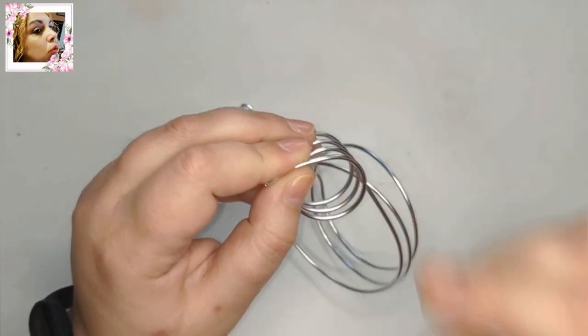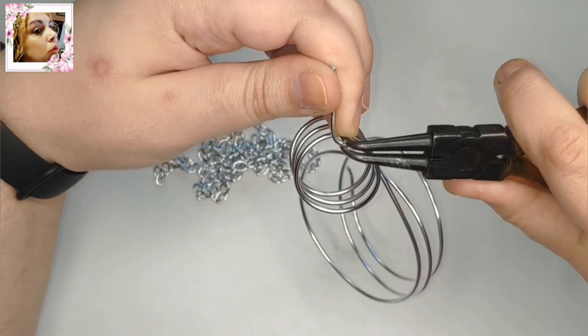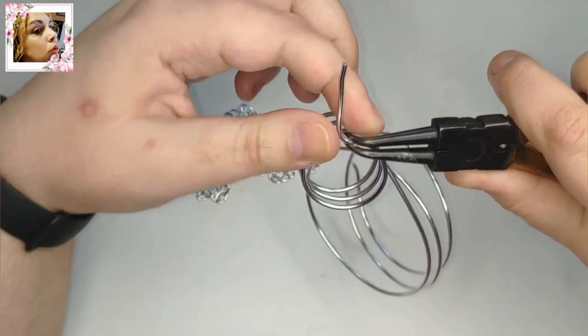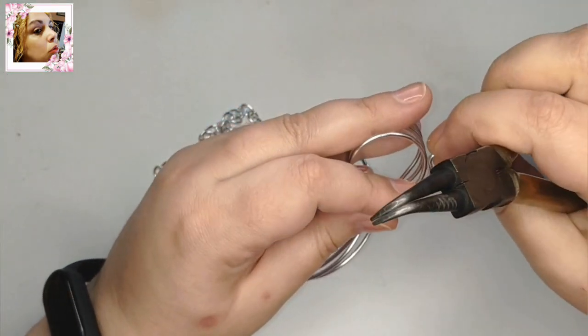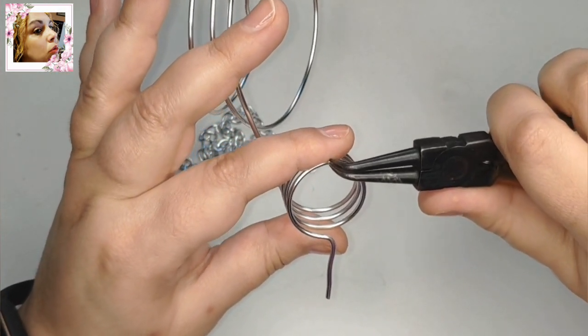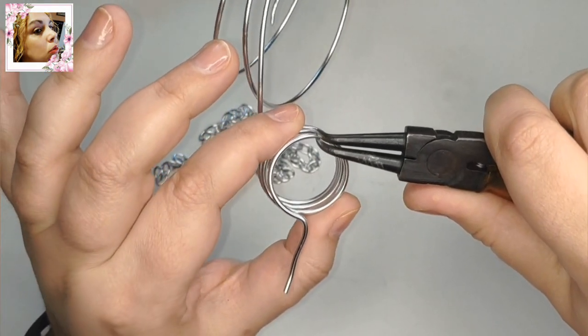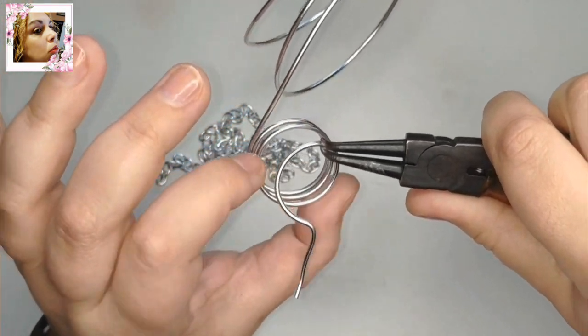The first thing I do is bend this end upward, measure it because it will be the circle that holds the pendant, and now I go right in front of the bend and displace the three circles to the left, like this, this way.